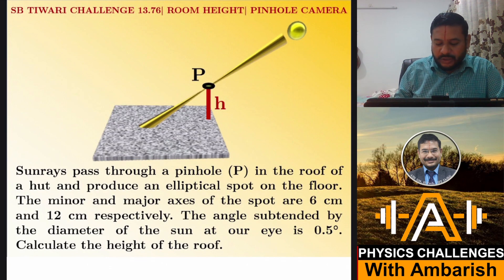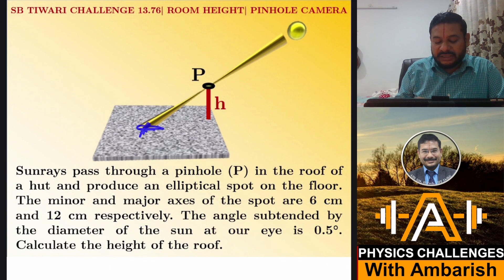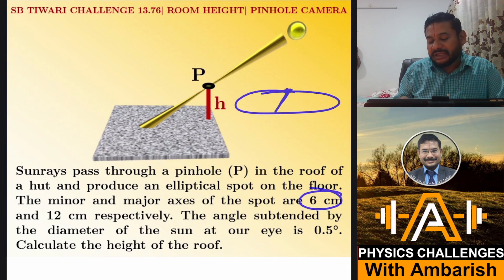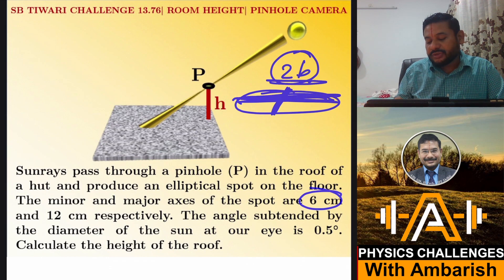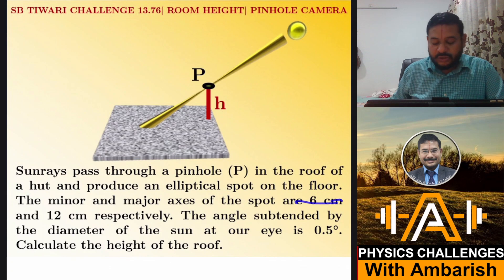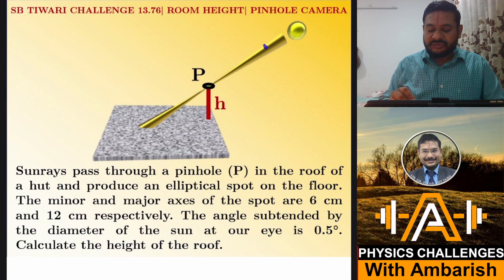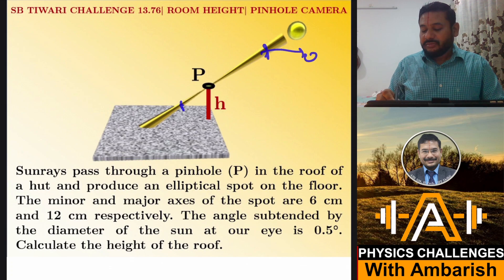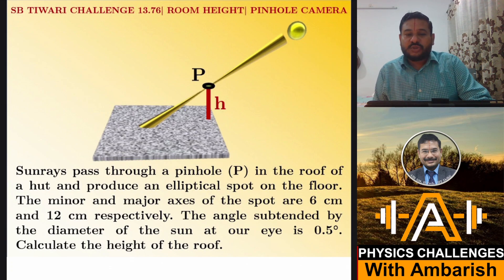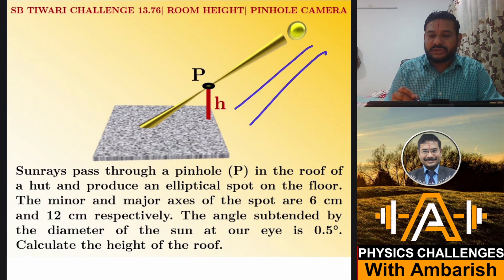The minor and major axes of the spot are 6 centimetre and 12 centimetre respectively. So in the ellipse, 2B is the minor axis and 2A is the major axis. Thus 2B and 2A are given as 6 centimetre and 12 centimetre respectively. The angle subtended by the diameter of the sun at our eye is 0.5 degree — a very small angle. The rays are not literally parallel but almost parallel, since 0.5 degree is very close to zero.